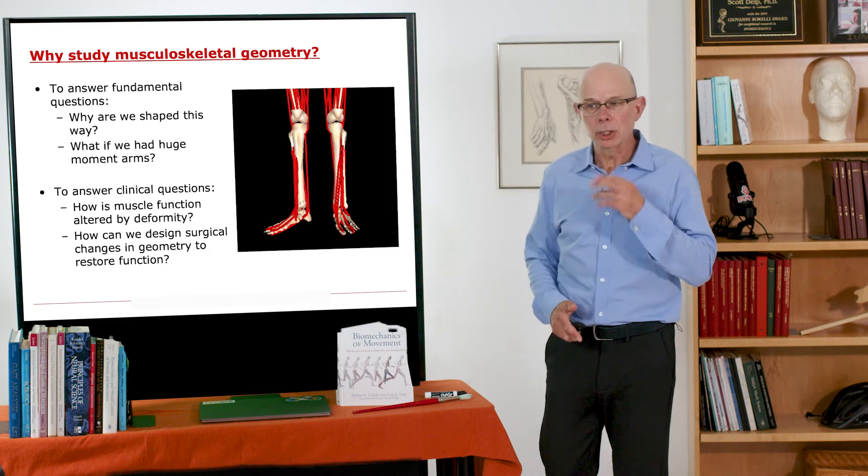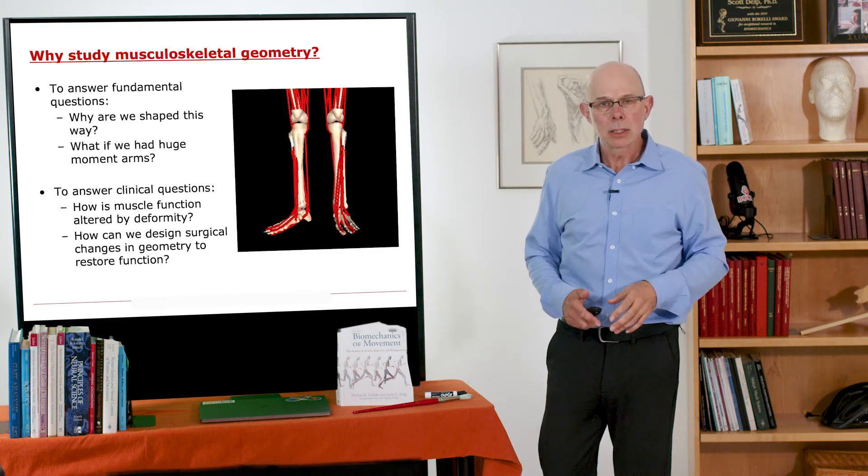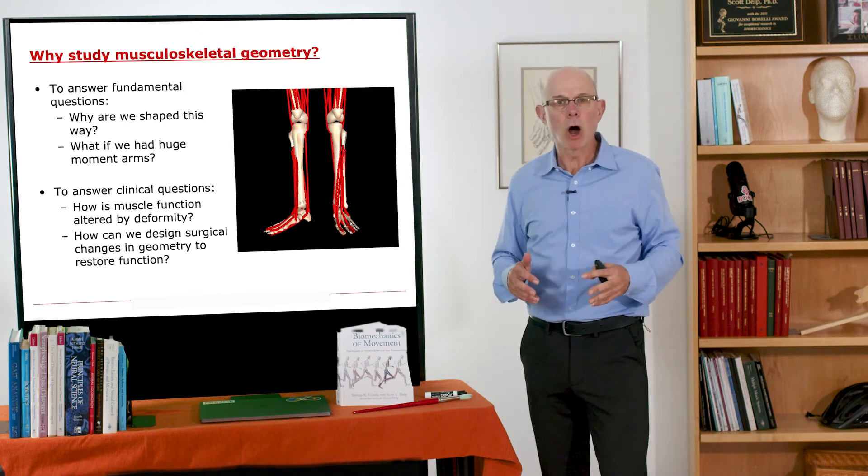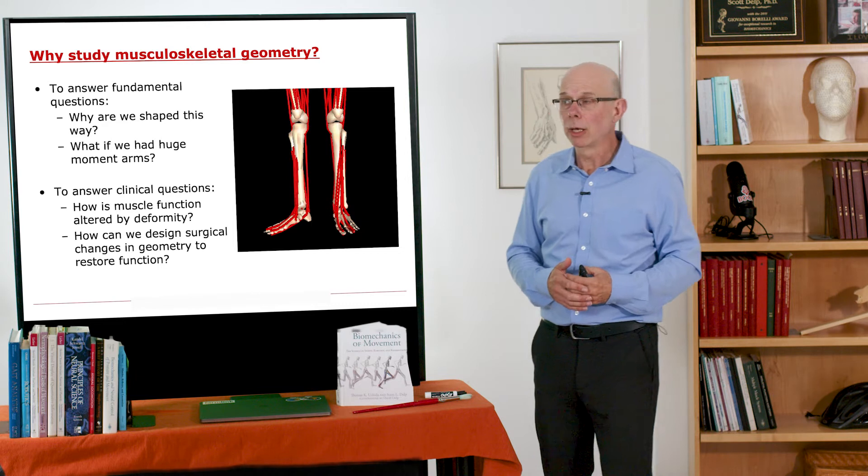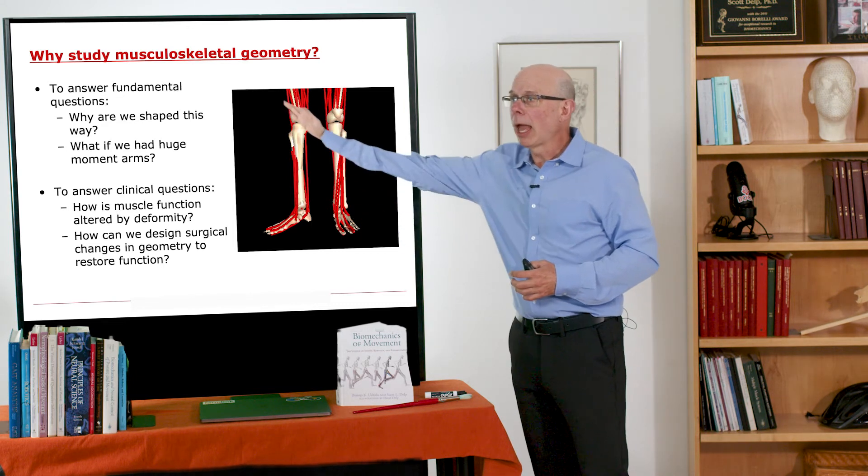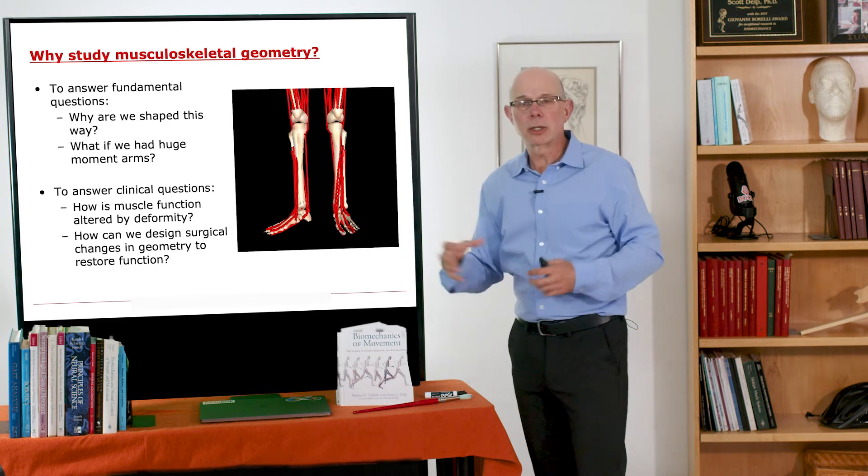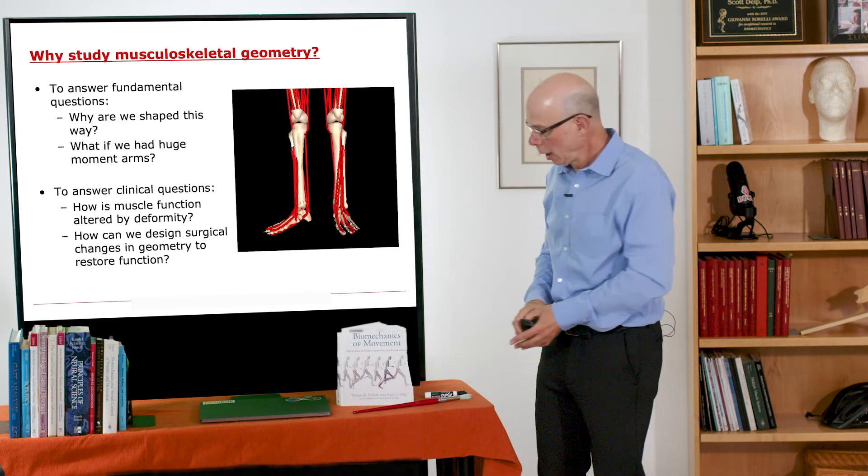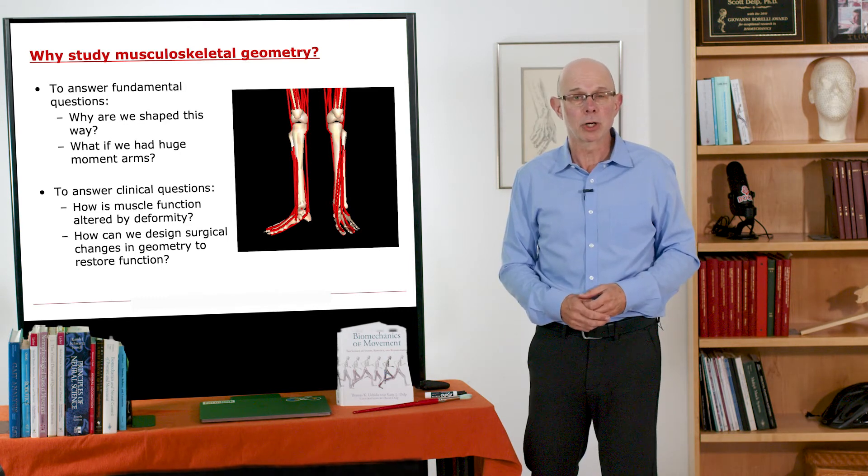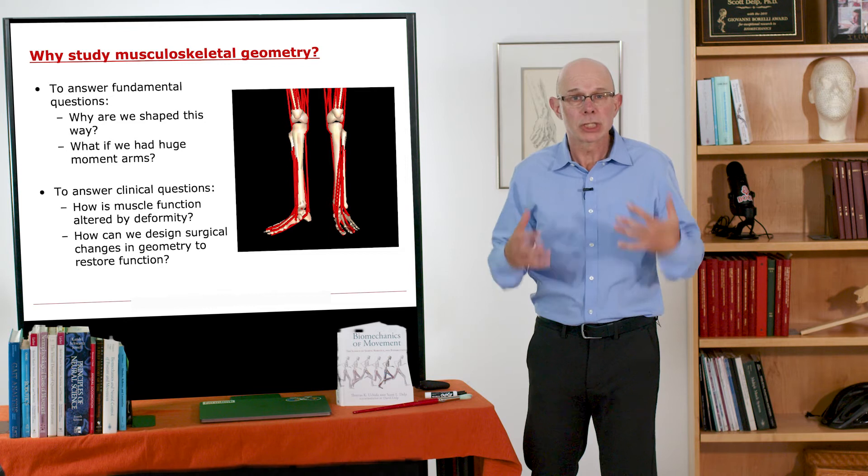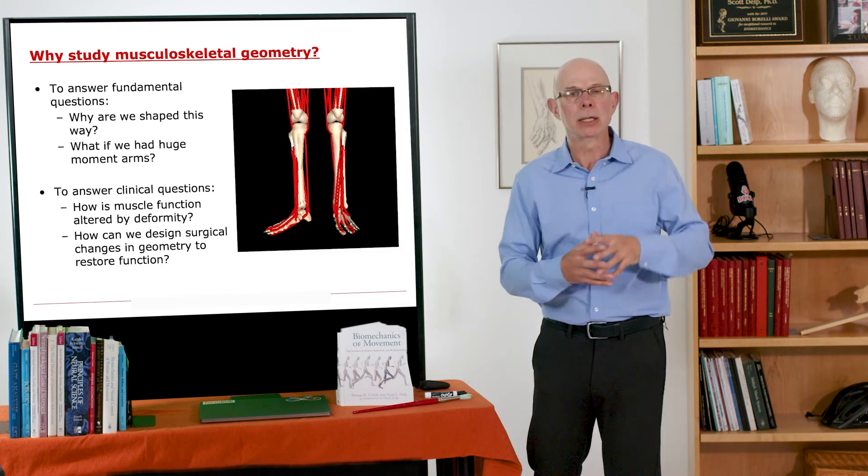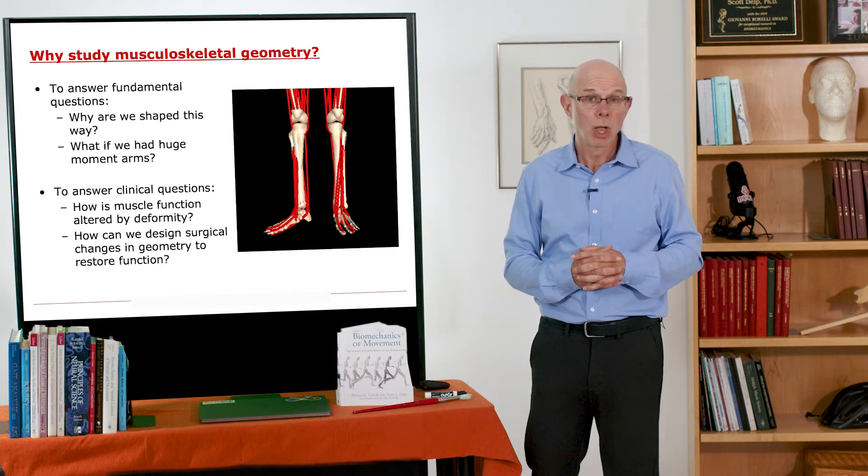Why else might we study musculoskeletal geometry? Another reason is to answer clinical questions. How is muscle function altered by a bone deformity? What I'm showing here is a computer simulation of a normal lower limb and one that's altered such that there's a tibial torsion deformity. This occurs frequently in neuromuscular diseases, in cerebral palsy for example. The forces that act on the skeleton are abnormal and that ends up twisting the bone as the child develops. So you end up with bone deformities.